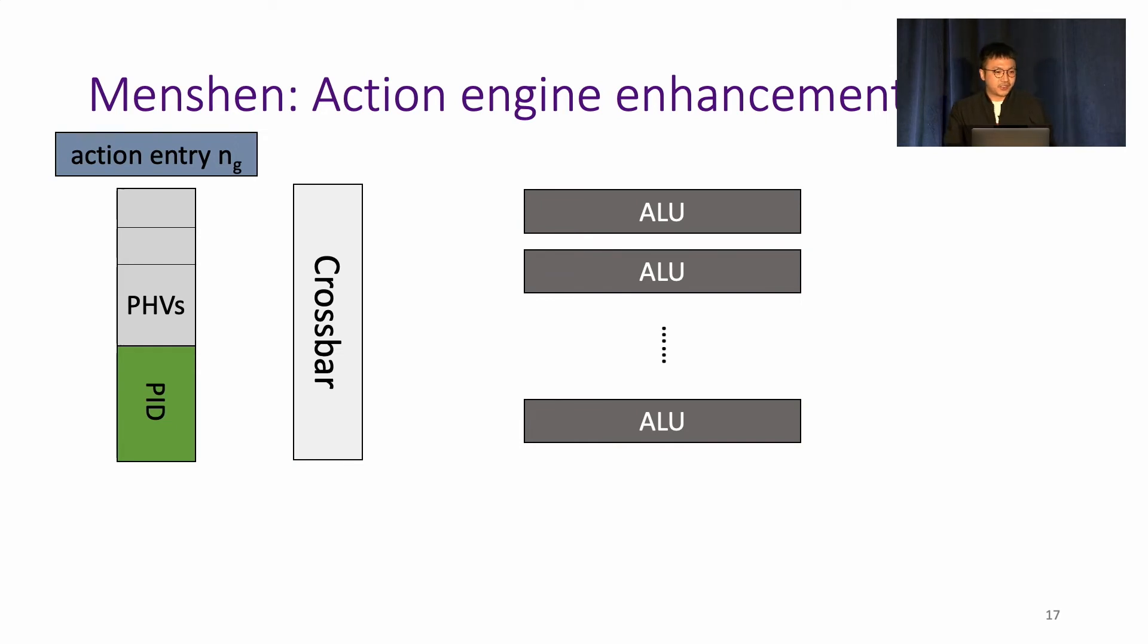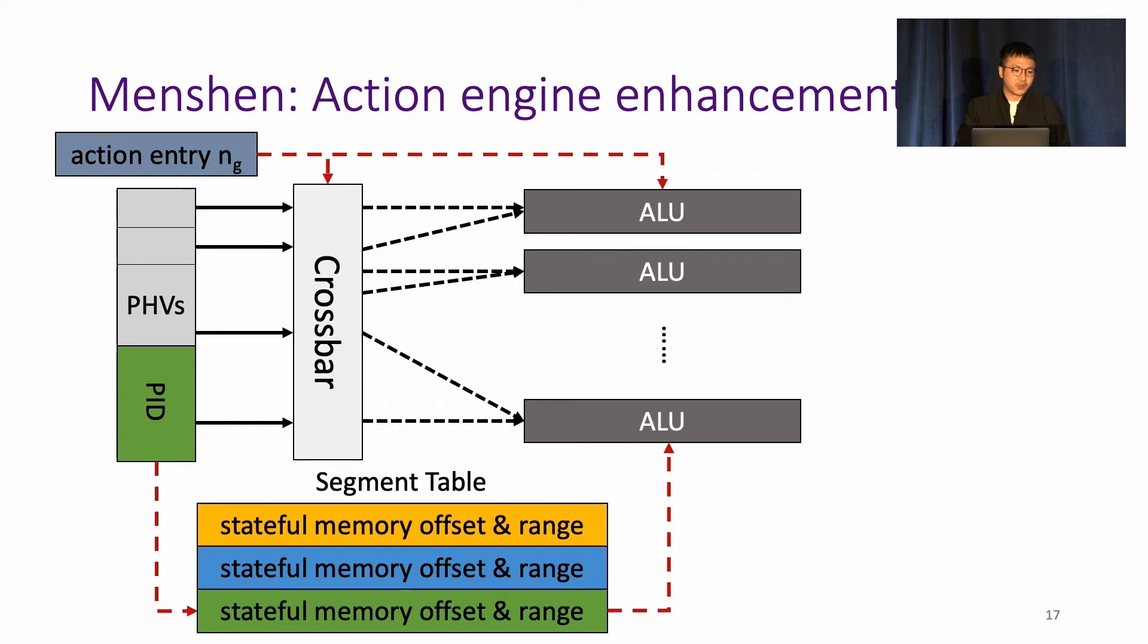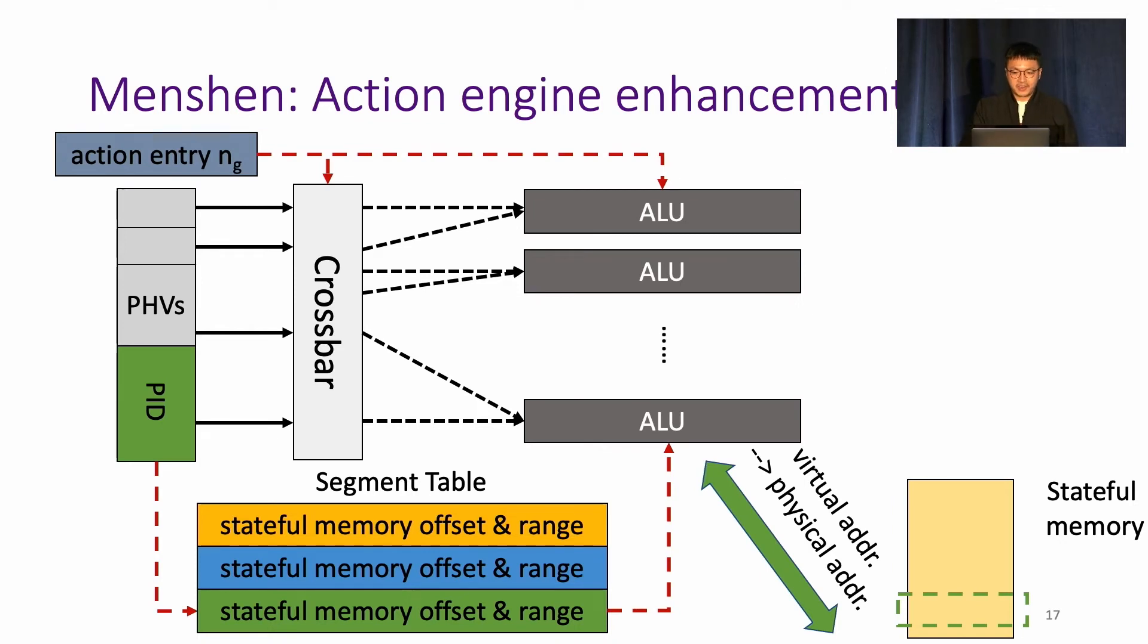Lastly, in the action engine, the selected action entry is used to configure the crossbar and configure the operation code of each ALU. The crossbar will select the fields from PHV and use them as the operands of each ALU. At the same time, PID is used to index a segment table to get the stateful memory offset and range. The ALU then uses this configuration to convert the virtual address to the physical address to access the stateful memory. So the resources here are space partitioned among programs. The ALU will then carry out the operations and output to the PHV.